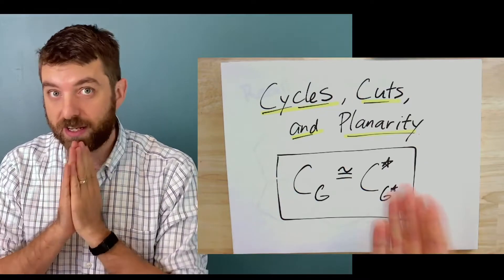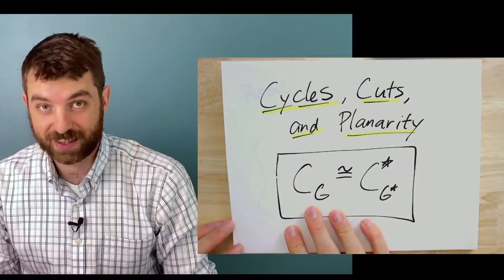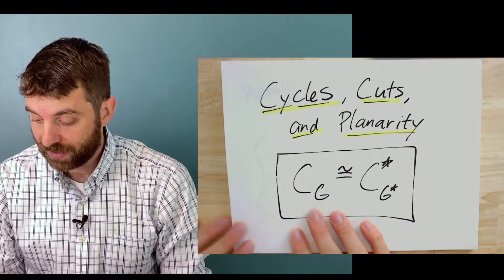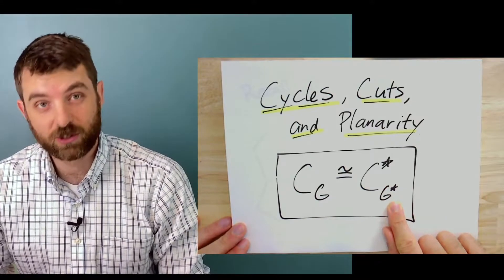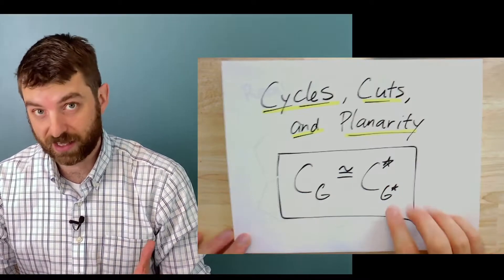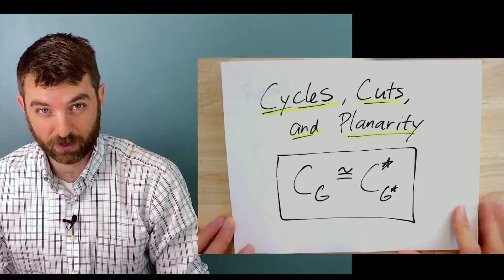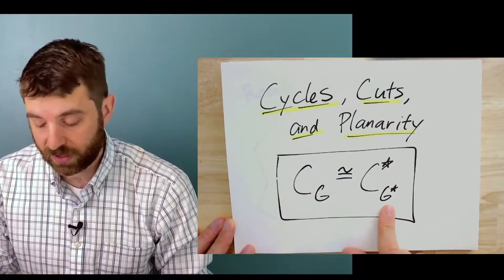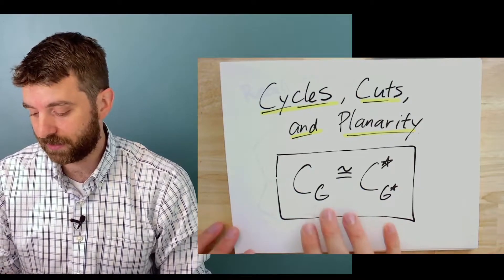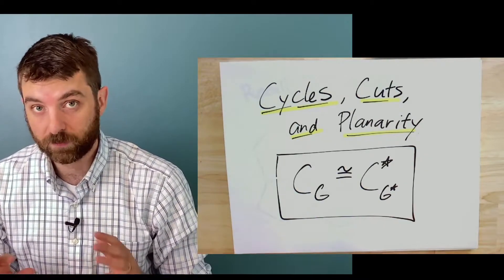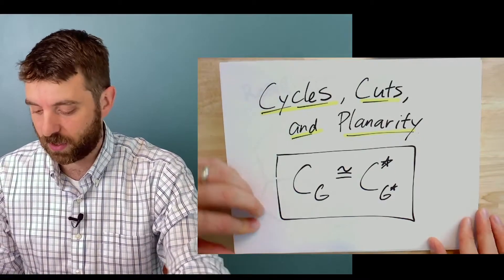The big punchline is right here: the cycle space of a graph is going to be isomorphic to the cut space of its dual — for planar graphs. Because we're talking about the dual of a graph, it should be a planar three-connected graph. We're going to see a variation of this when the graph is planar but not three-connected, where we can talk about the dual of an embedding, and this will still hold in that case as well.